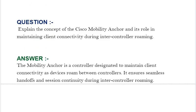Our next interview question is: explain the concept of the Cisco mobility anchor and its role in maintaining client connectivity during intercontroller roaming. Your answer should be: the mobility anchor is a controller designed to maintain client connectivity as devices roam between controllers. It ensures seamless handoffs and session continuity during intercontroller roaming.